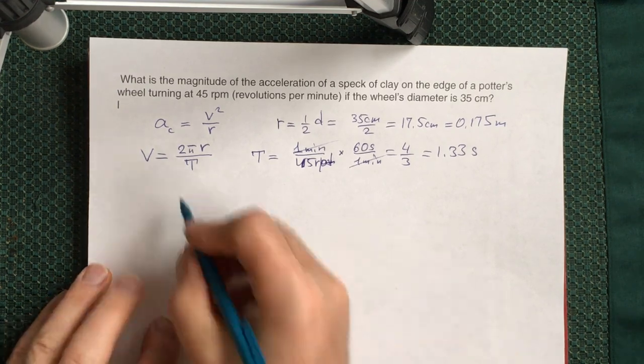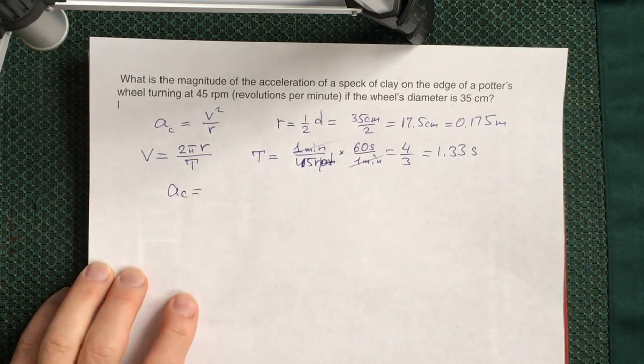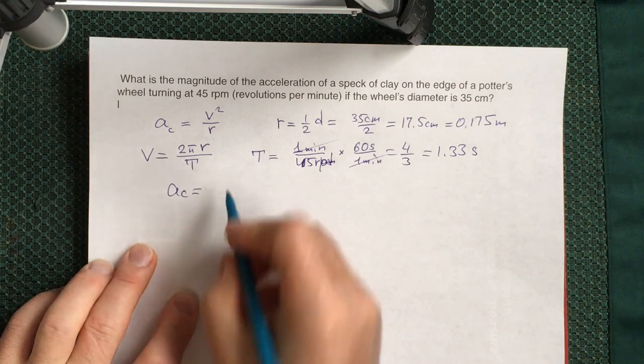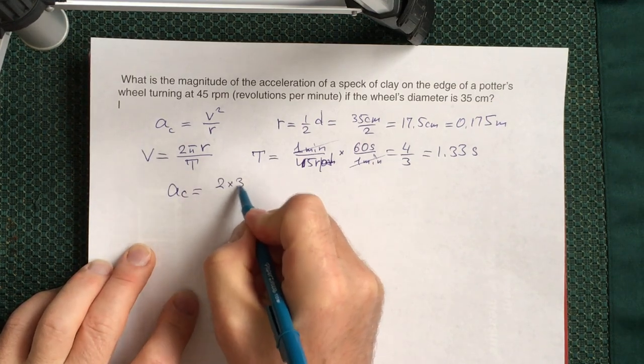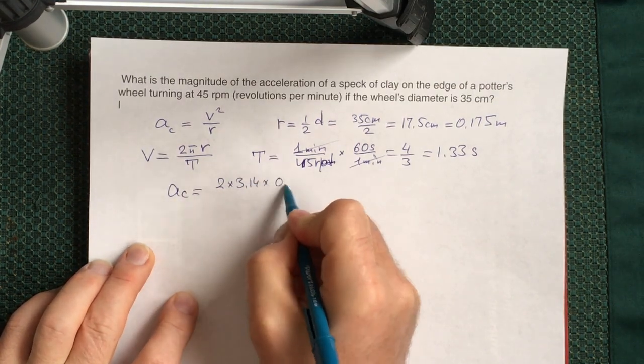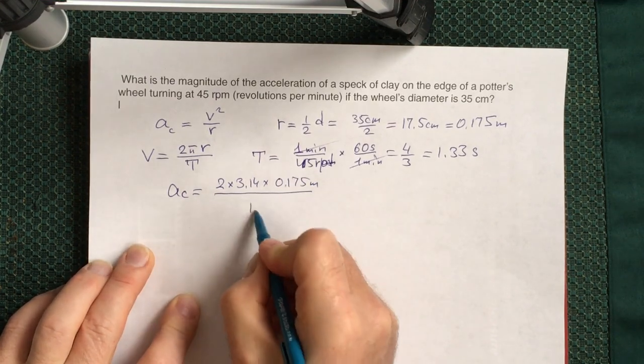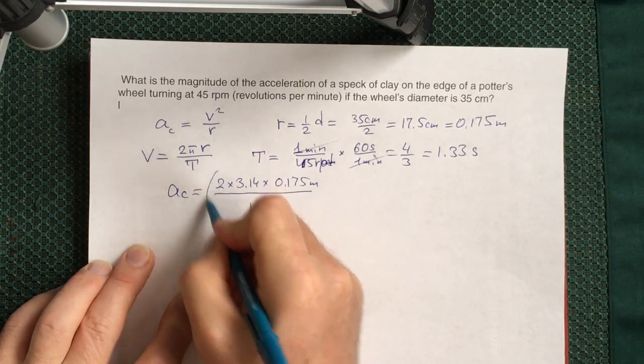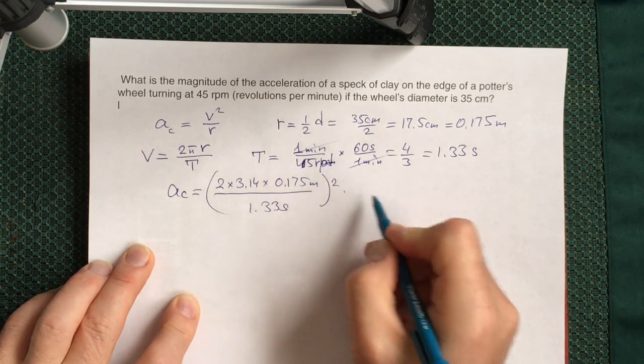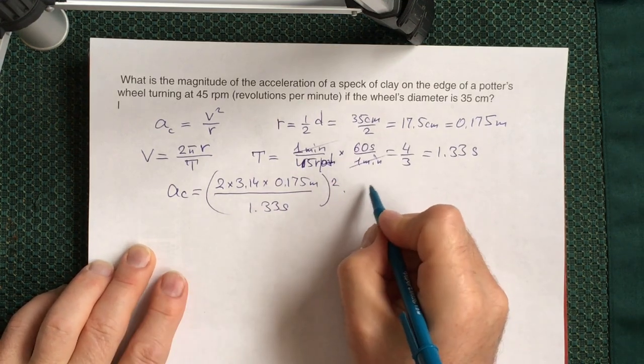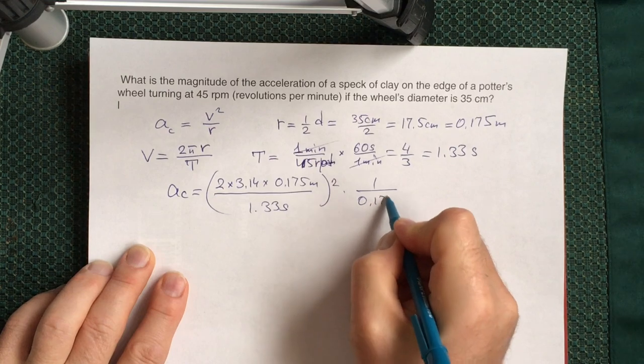Then your centripetal acceleration will be 2π (π is 3.14) times 0.175 meters divided by 1.33 seconds—this is our velocity—squared, and divided by r, 0.175 meters.